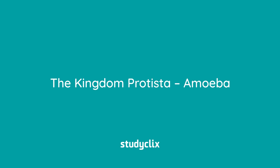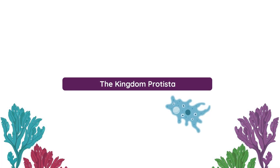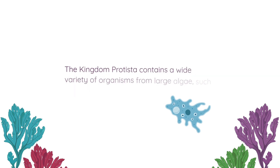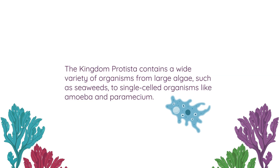Now we will focus on the kingdom Protista in a bit more detail and we will take a closer look at amoeba as our model organism from this kingdom. The kingdom Protista contains a wide variety of organisms from large algae such as seaweeds to single-celled organisms like amoeba and paramecium.